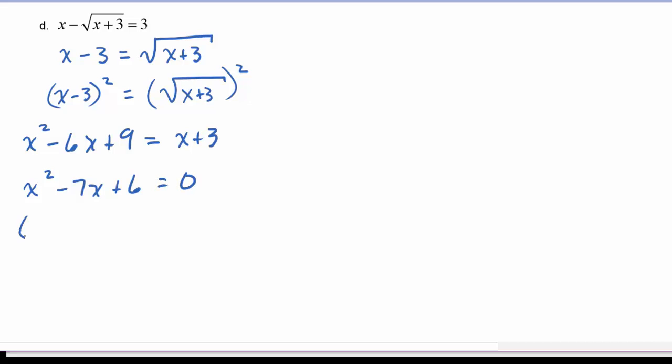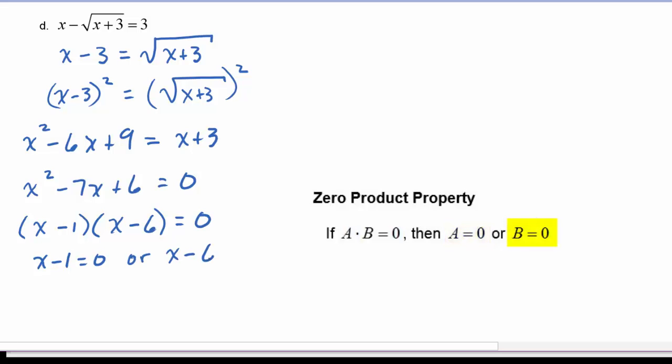This is a pretty easy factorization. x minus 1, x minus 6 is equal to 0. Now we're going to use the zero product property, and we have x minus 1 is equal to 0, or x minus 6 is equal to 0, which means we get x is equal to 1, or x is equal to 6.